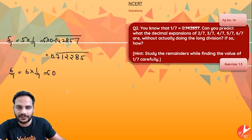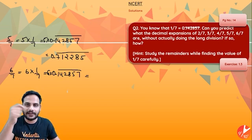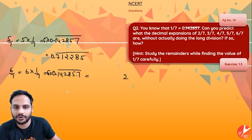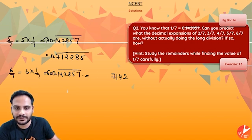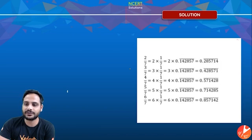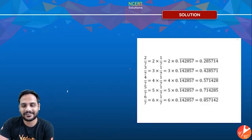6/7 = 6 × 0.142857 bar. Multiplying: 6×7=42, carry 4; 6×5=30+4=34, carry 3; 6×8=48+3=51, carry 5; 6×2=12+5=17, carry 1; 6×4=24+1=25, carry 2; 6×1=6+2=8. So 6/7 = 0.857142 bar. These are all the values without actually doing the long division.